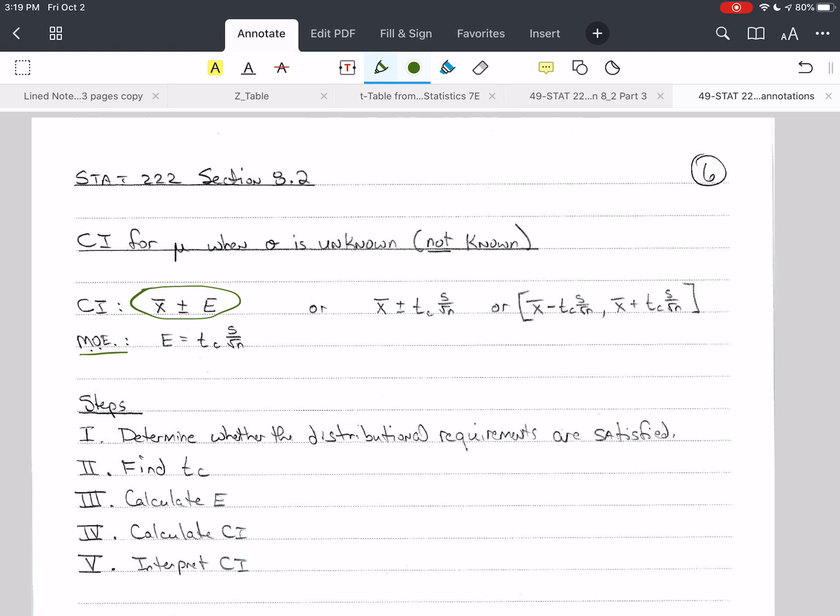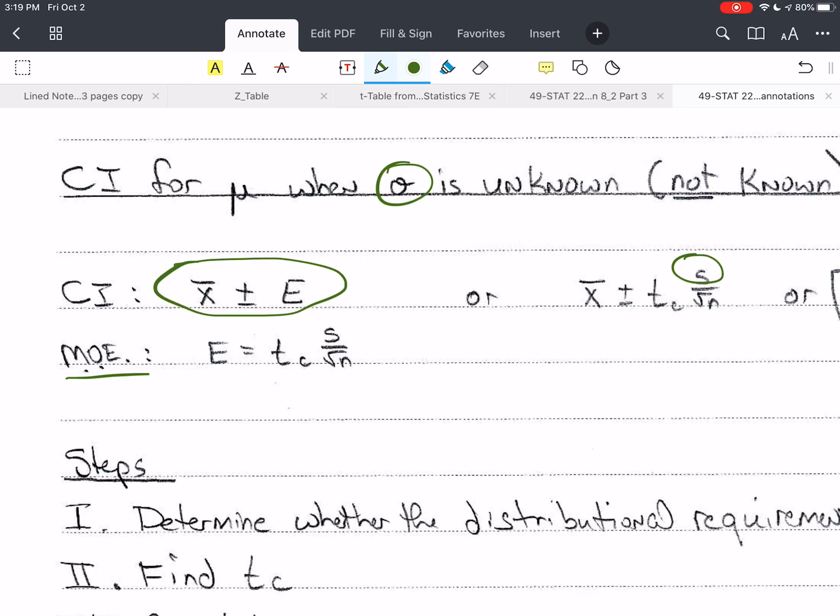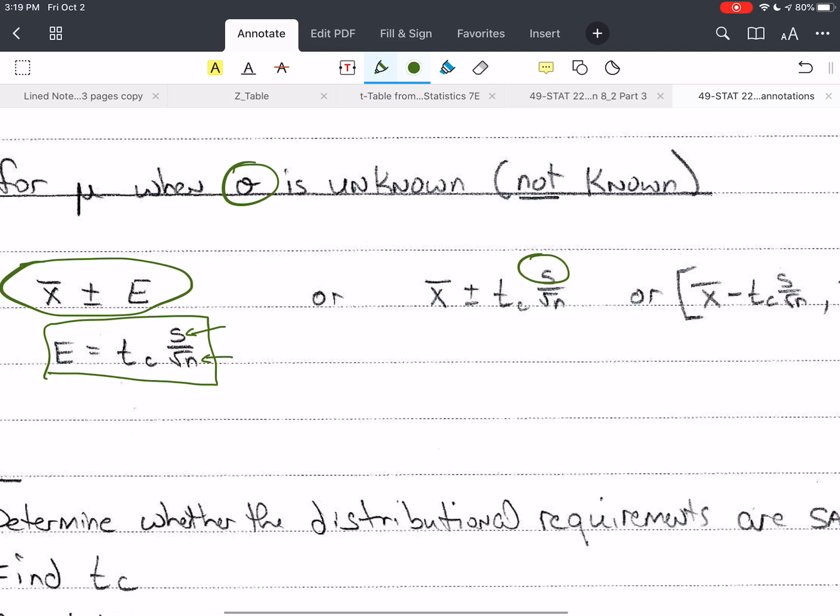When we do not know sigma, when sigma is unknown, we're going to use s to estimate sigma. That's the best we can do. We can use the sample standard deviation. So our margin of error is e equals t sub c, our critical value, times s, the sample standard deviation, divided by the square root of the sample size. I can write this all in one formula, like this: x bar plus or minus t sub c times s over the square root of n.